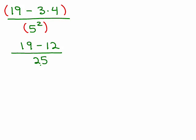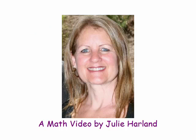All right, we still have to simplify the numerator. 19 minus 12 is 7, and the denominator is 25, so our answer is simply a fraction. I hope you learned something. Remember, math is cool.